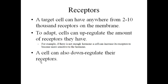Cells can upregulate or downregulate their receptors. In the case of upregulation, they can increase their receptors to make the cell more sensitive to a hormone. So if you had a low level of a certain hormone, the cells would increase their receptors so that they would be better at taking in that hormone.